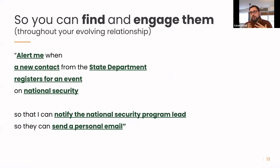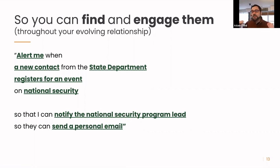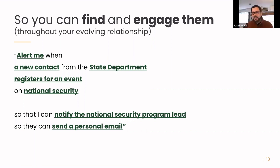Another example: if someone signs up for email from a national security topic page, then add them to the national security list, or flag them in the system as being interested in national security so they can get emails specifically about national security. This is the big 'why' of having a contact model — you need to have it in place to empower these types of interactions.